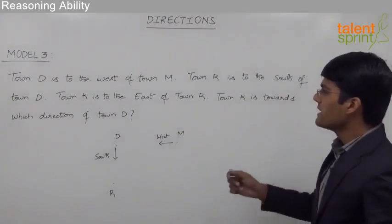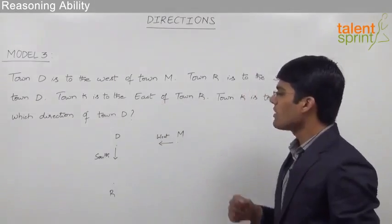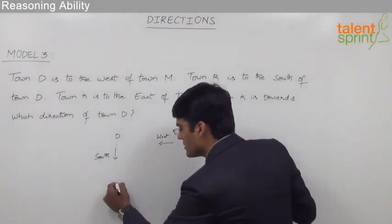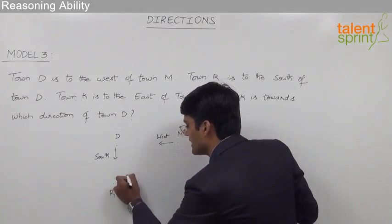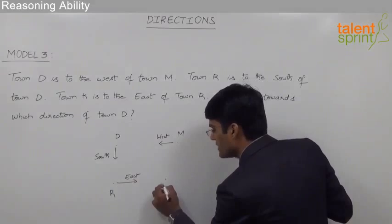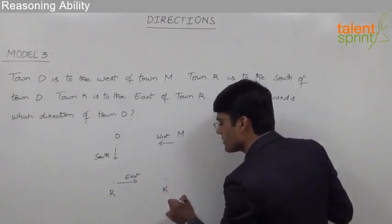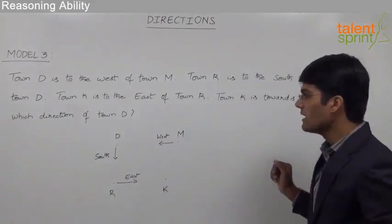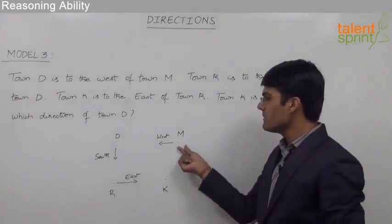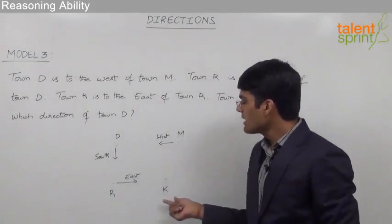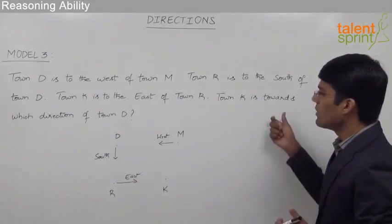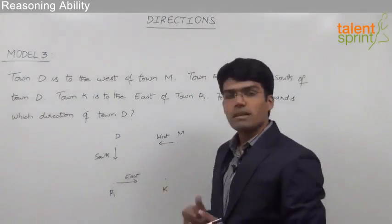Finally, it says town K is to the east of town R. East of town R is nothing but towards our right. So town K can be taken at some point towards the east of town R. These are the four towns as given in the question: town M, town D, town R, and town K.